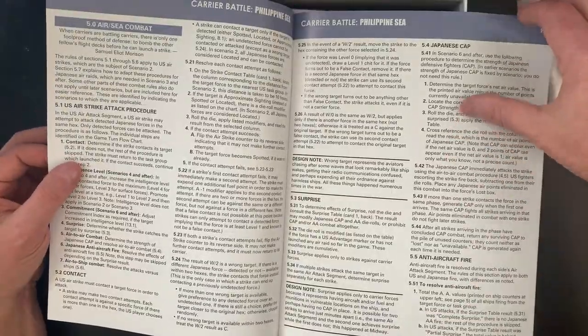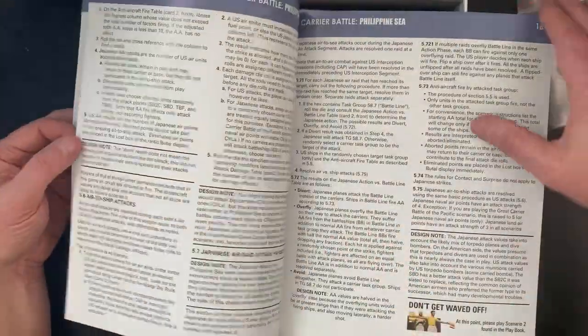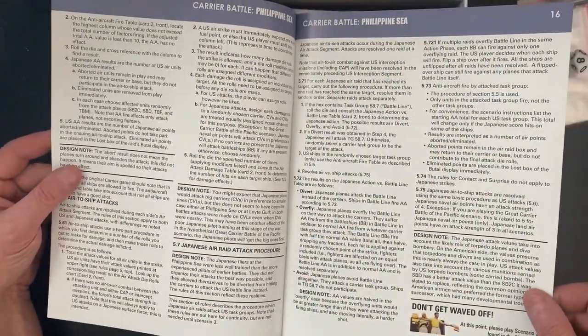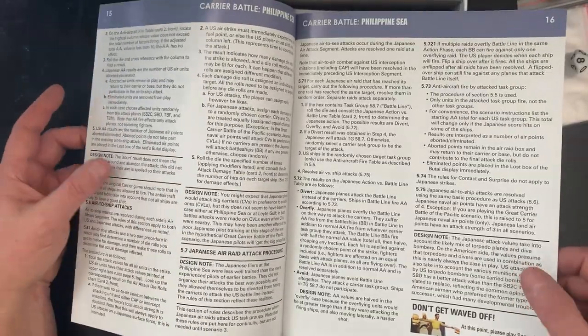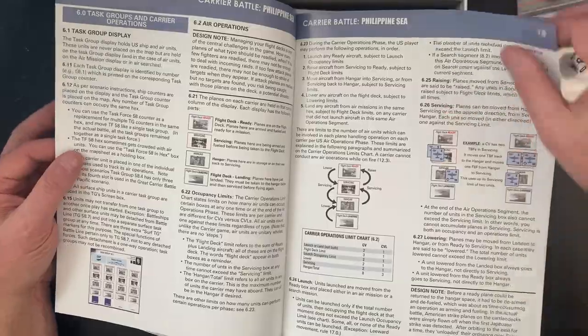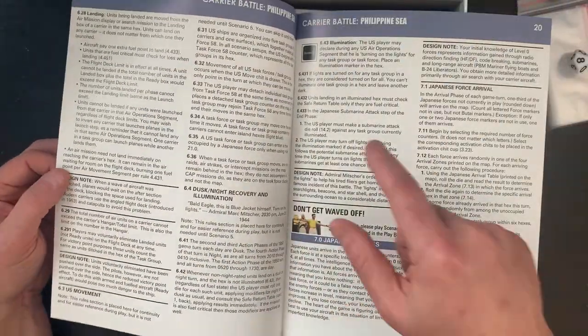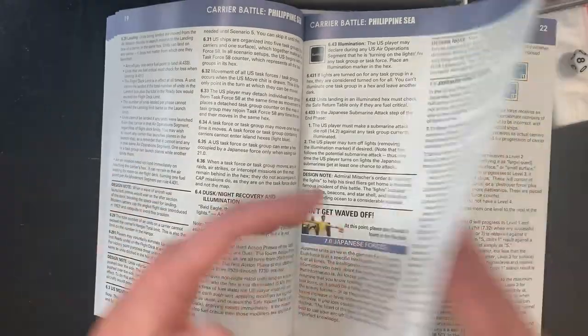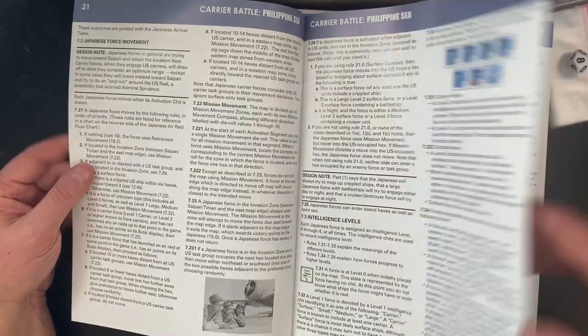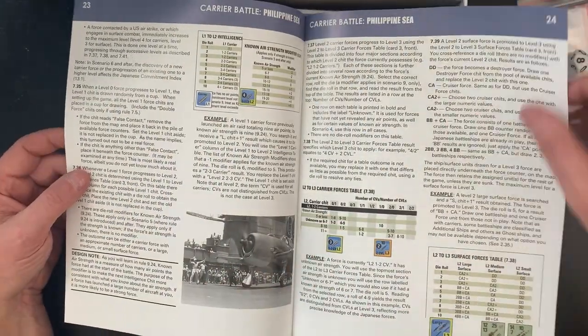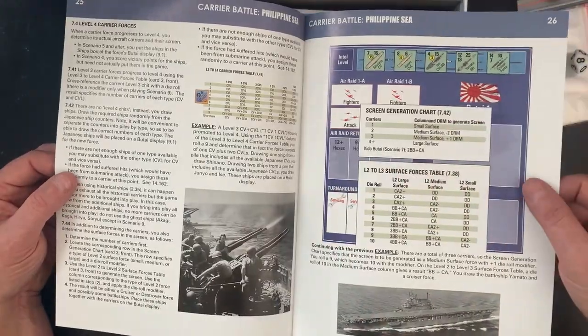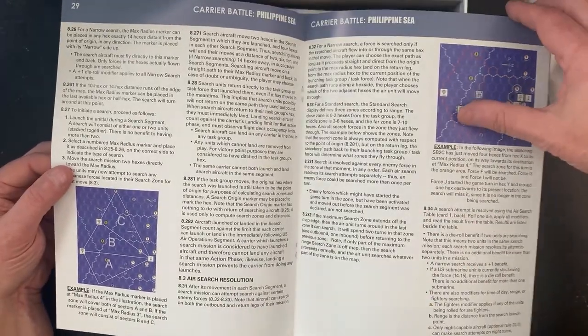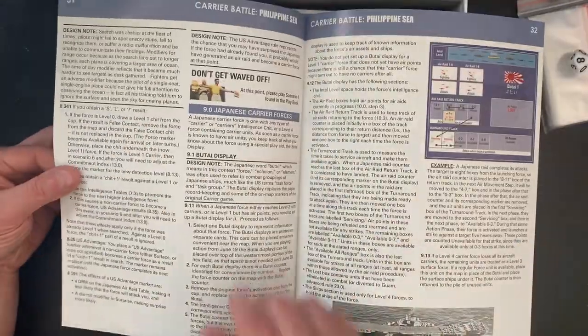Then we get into air-sea combat. Four pages get you to scenario two. Nice. You got some designer notes. I love designer notes. Three and a half pages to get you to scenario three. A little more detail: six, seven, eight, nine, ten. We're halfway through the book, we're still looking for scenario four. There we go.